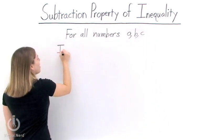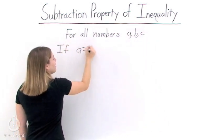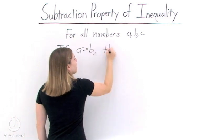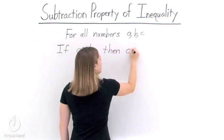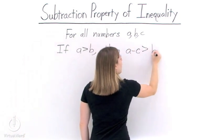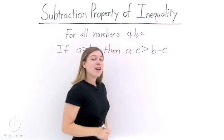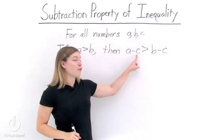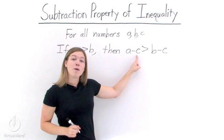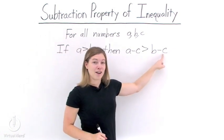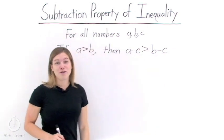If we have a is greater than b, then we have a minus c is greater than b minus c. In other words, if we subtract c from one side of our inequality, we must subtract c from the other side of our inequality in order to preserve that inequality.